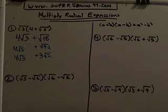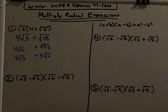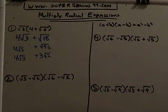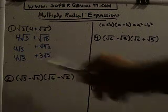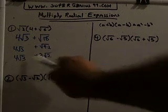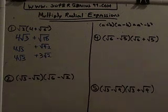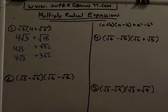We can't add those two because we can only add radicals if they have the same index and the same radicand. Over here we have radical three, and over there we have radical two, so we can't add those. That's our final answer.